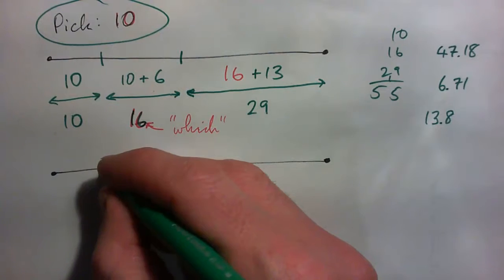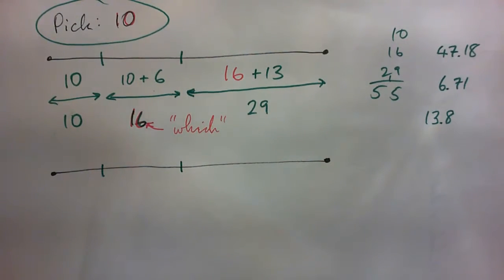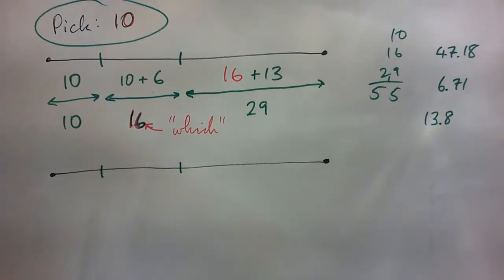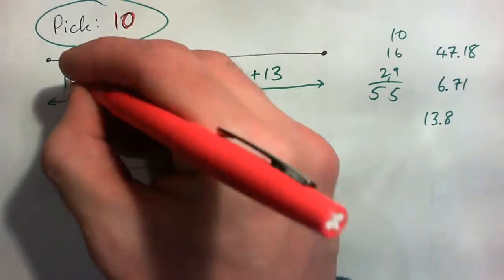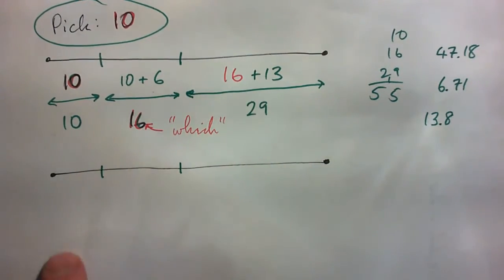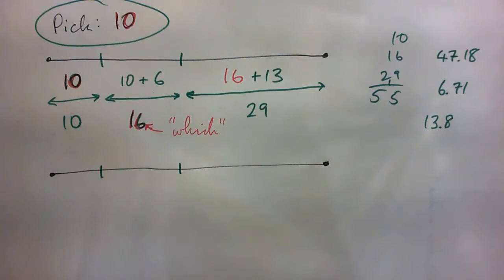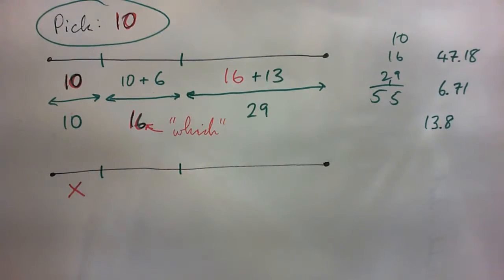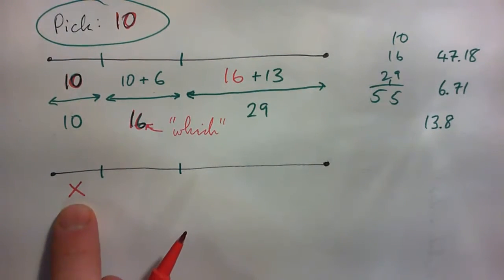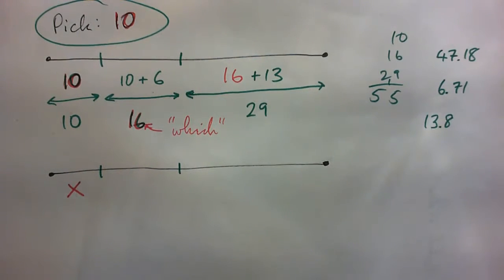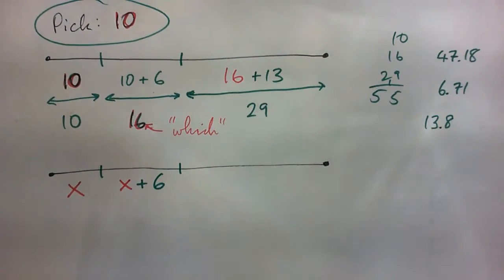So please, it's good to guess, but also you've got to do the algebra to get the points. So instead of picking the number 10 and saying that the shortest length is 10, I'm going to draw the rope again, and this time say that the shortest length is our favorite letter X. So if the shortest length is X, what's the next length, the medium length? The shortest piece is 6 shorter than the next, so the next piece is 6 longer: X plus 6.